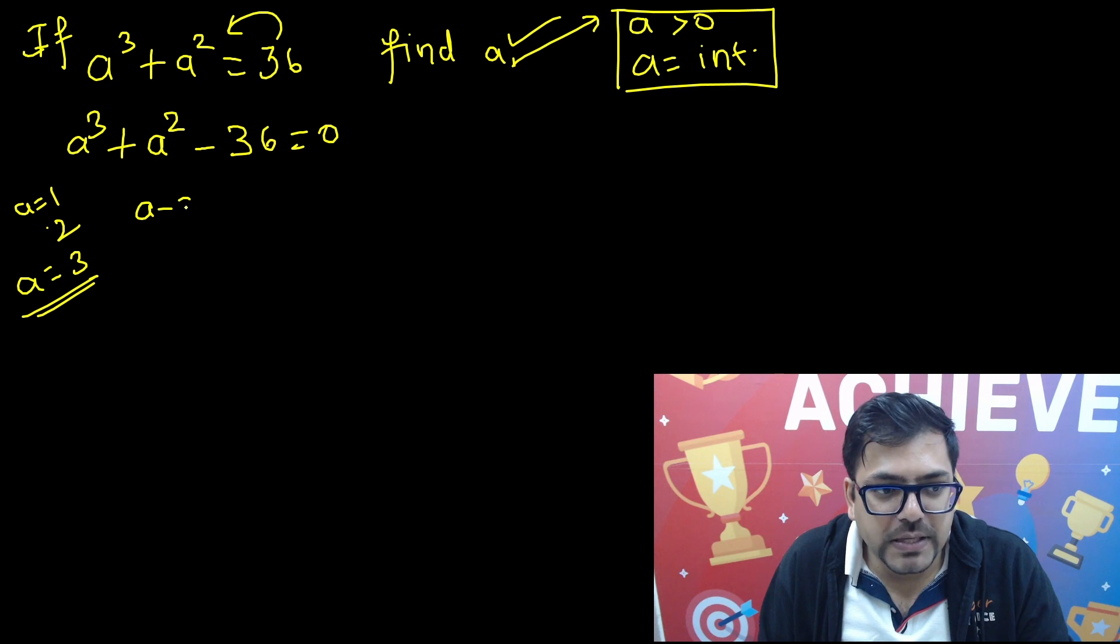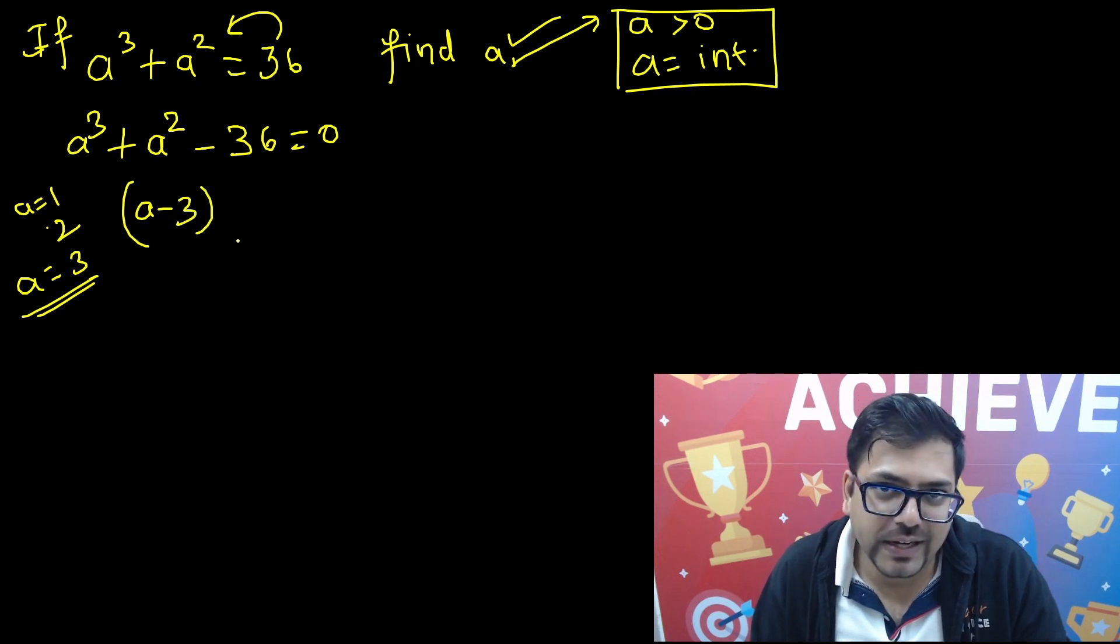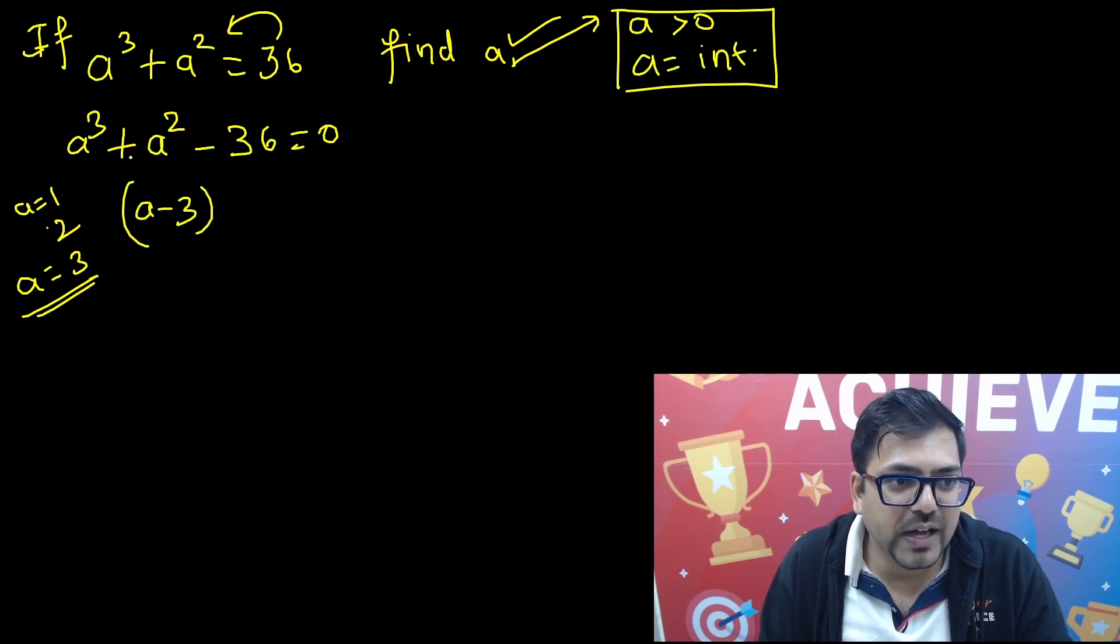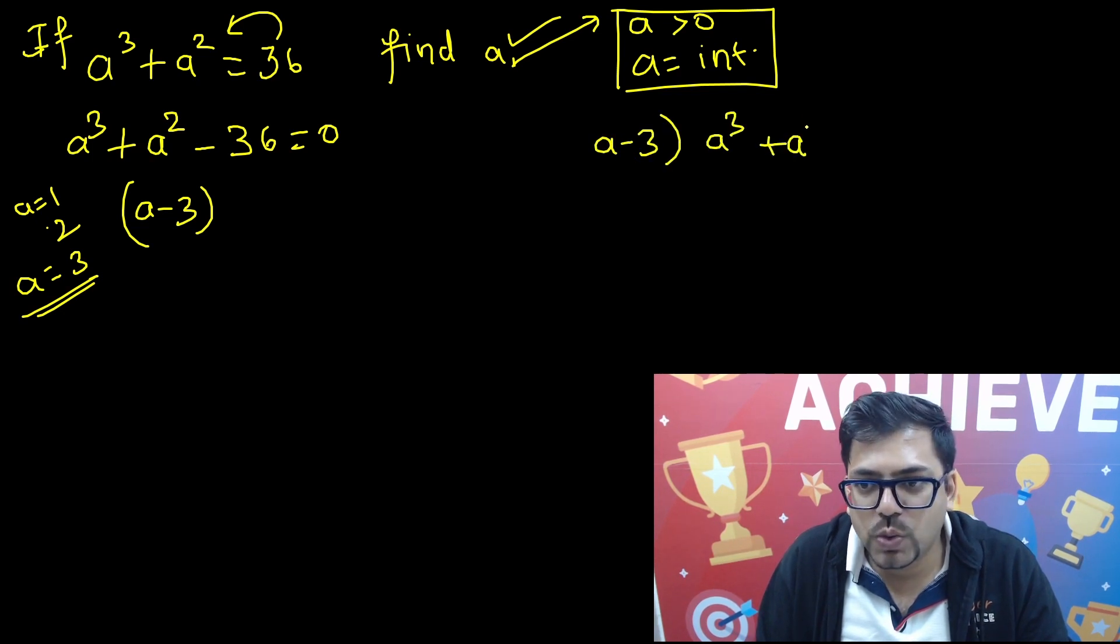This means a - 3 is going to be the factor. So if a - 3 is going to be the factor, we have to divide this a - 3 and we have to divide this a³ + a² - 36.